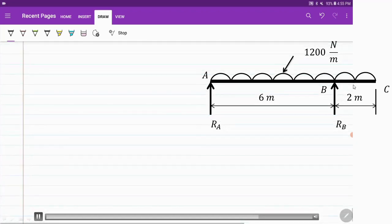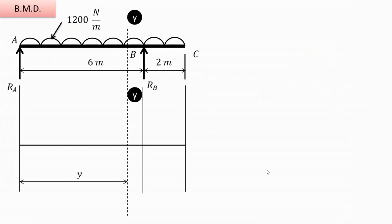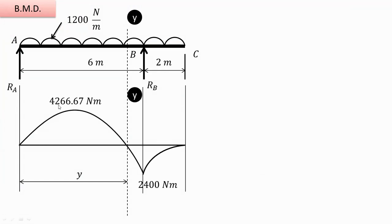Bending moment at the end point C is always 0. Now drawing the bending moment diagram: bending moment at the point of zero shear is 4266.67 N·m, at point B it is 2400 N·m, and at end points it is 0. The bending moment diagram changes sign from positive to negative between B and C, so there is a point of contraflexure.